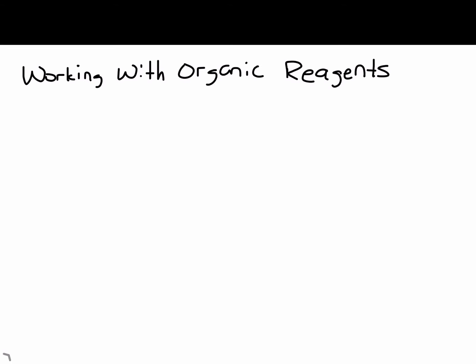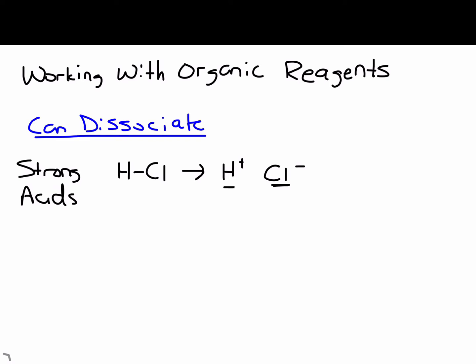So the first thing we'll look at are things that actually can dissociate into ions. The first category would be any strong acids, so that's things like HCl. And even though this is a covalent compound, if you think about dissolving it in solution, it can break up into ions. So it's perfectly fine to think of this as H plus and Cl minus, where the H plus is a reactive proton and Cl minus can be a nucleophilic anion.